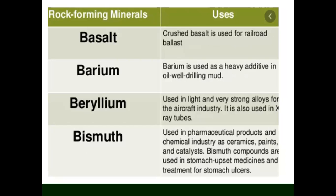We also have basalt, barium, beryllium, and bismuth — these are just a few of the thousands of minerals found on Earth. Barium is used as a heavy additive in oil well drilling. Beryllium is used in light and very strong alloys for aircraft and for X-ray tubes. Bismuth can treat upset stomach and is also used in chemical industries like ceramics and paint, and as a catalyst to speed up chemical reactions.